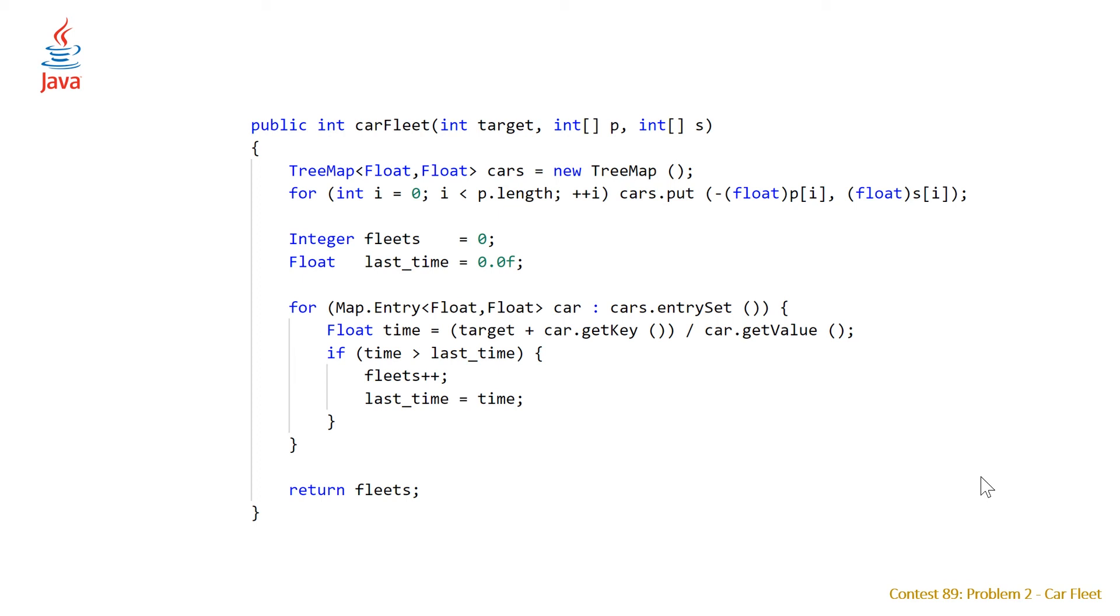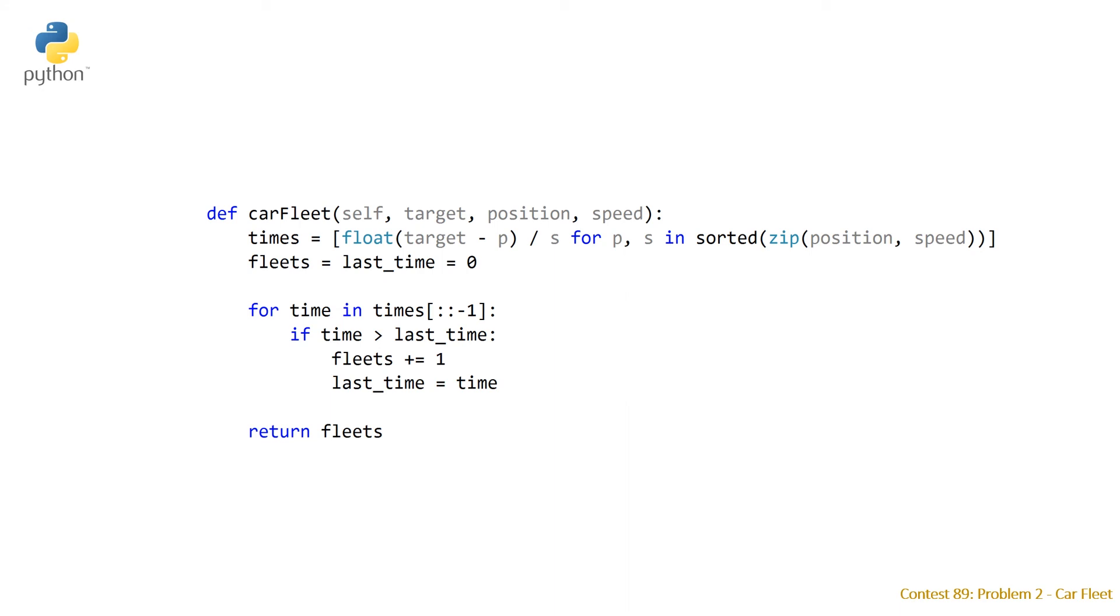And our last solution is a Python solution. Thanks to Lee215, I referenced his solution on the LeetCode forum. We don't have a tree map or a map equivalent in Python. So we're just using a sorted list of tuples here. We're using the zip function to zip together our position and speeds. We're sorting that. And then we're calculating, it's not a list of tuples. We're creating a tuple here, a sorted list of tuples, and then using that to create just a list of floats that are the times. And so once we have this list, we then just initialize our fleets and last time variables. And then we use a loop and loop through for each time in our list times. We can just check if time is greater than last time, do a plus equals one for fleets, and then reset last time, and then just return fleets as well.